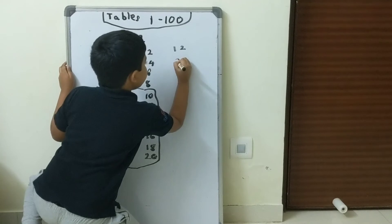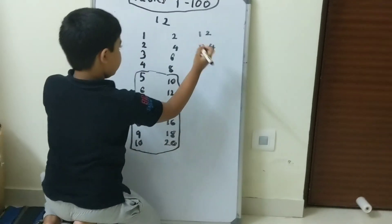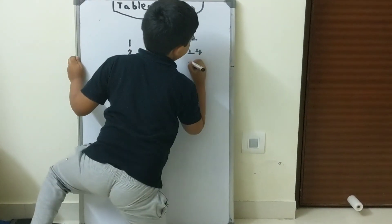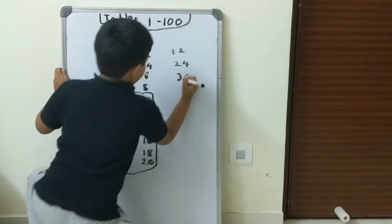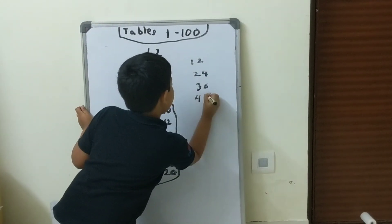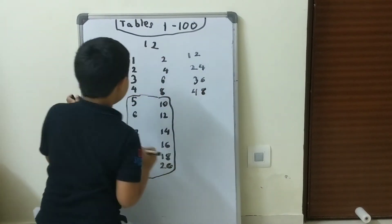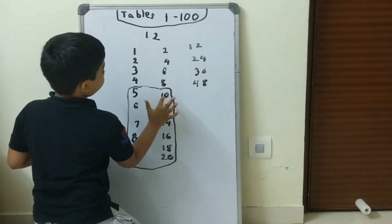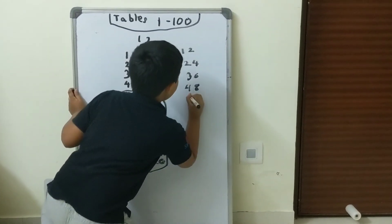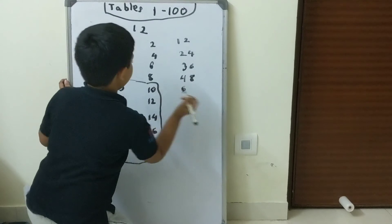And then 24. And then 36. Then 48. Then this is 5. 5 plus 1 is 6. So, 6 and 0.